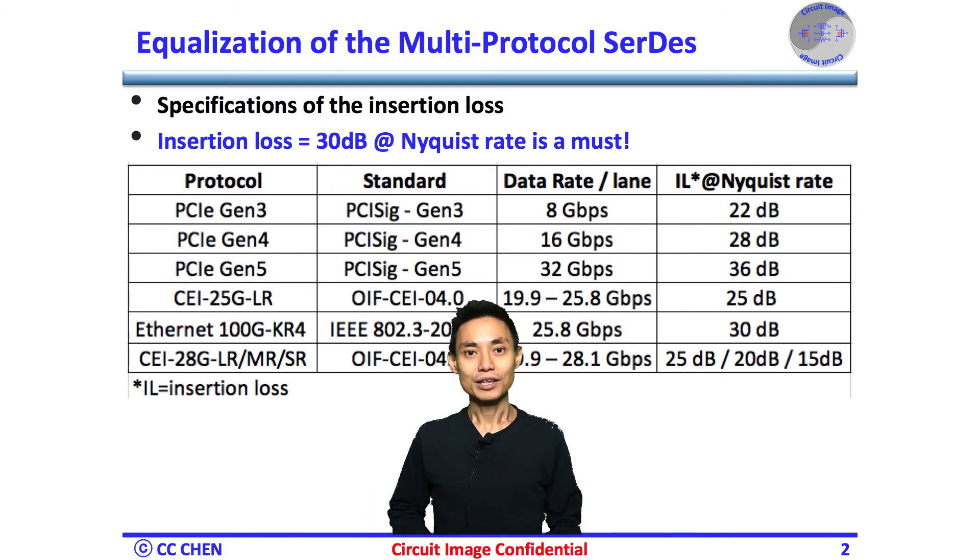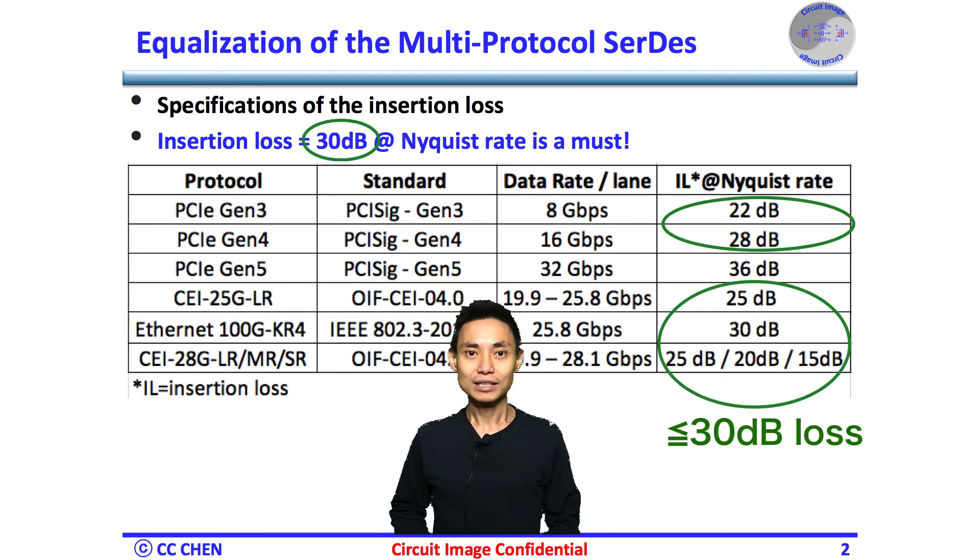As discussed in the why not TXFFE only video, most multi-gigabit SerDes require equalizing the channel loss roughly 30 dB at the Nyquist rate. So in this video, we may focus on the 30 dB case study of why CTLE only won't work.